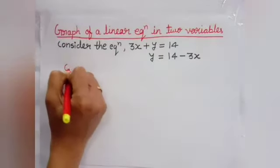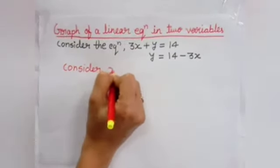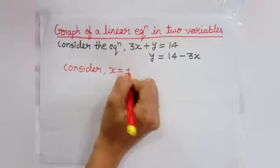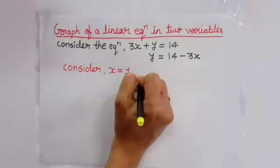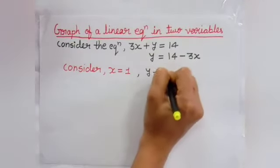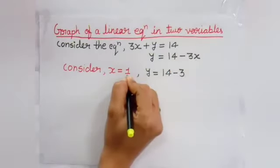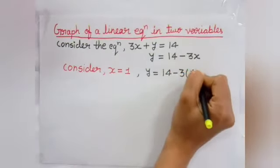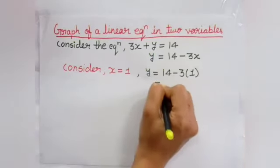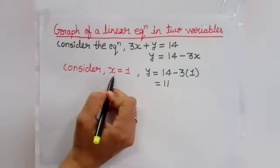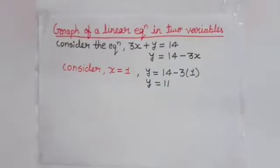अब हमें x की कोई भी एक value consider करना है। हम यहाँ पर x = 1 consider करते हैं। तो हम देखेंगे कि इसके लिए y की value क्या मिलती है? y = 14 − 3×1 = 14 − 3 = 11। तो x = 1 के लिए y की value 11 मिली।